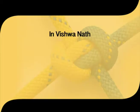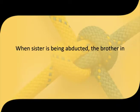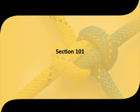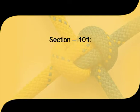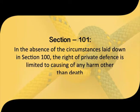In Vishwanath versus State of Uttar Pradesh, the deceased went to his father-in-law's house and dragged his wife with a view to take her against her will. The accused, on seeing his sister being dragged, gave a blow with a knife to the deceased who died immediately. It was held that when a sister is being abducted, the brother in exercise of the right of private defense can kill the abductor. Section 101 provides that in the absence of the circumstances in section 100, the right of private defense is limited to causing any harm other than death, again subject to section 99.